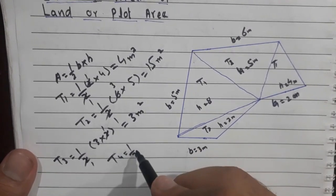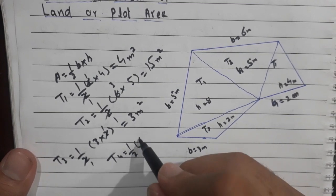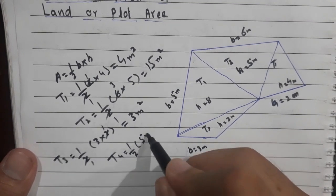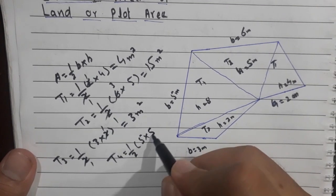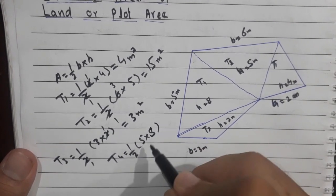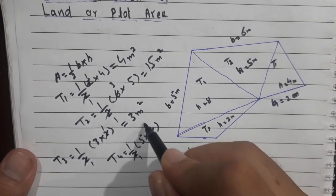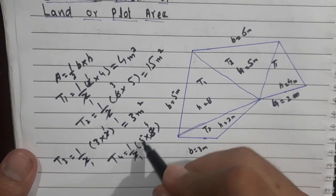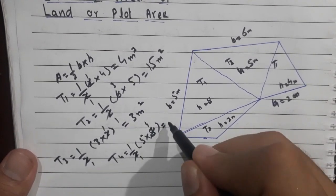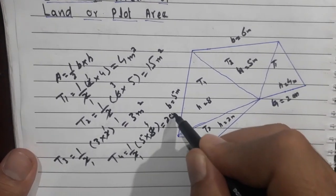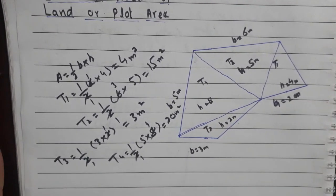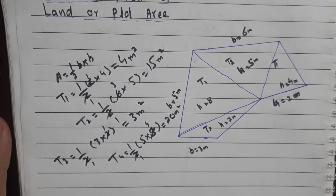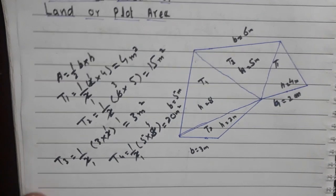Triangle number four: the base is 5 meters and the height is 8 meters. Area = (5 × 8) / 2 = 40 / 2 = 20 meters squared. So the area of triangle number four is 20 m².